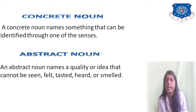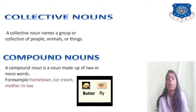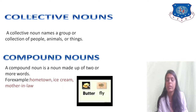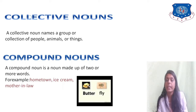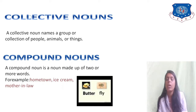A collective noun is the name of a collection of people, animals, or things together. For example, when there are many pencils grouped together, that is a collective noun. 'A herd of animals' is a collective noun — when a bunch of animals are traveling together, we say 'a herd.'